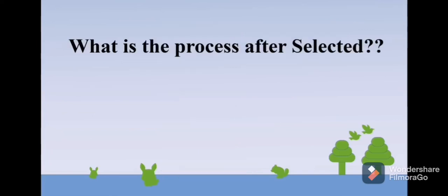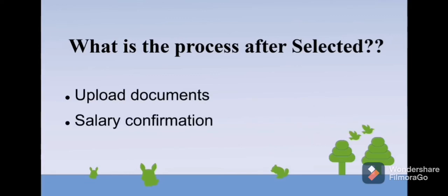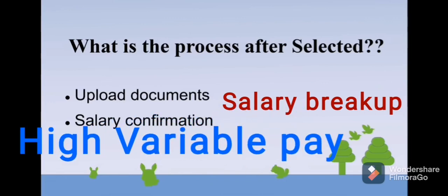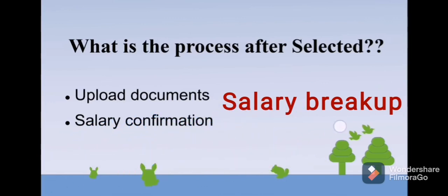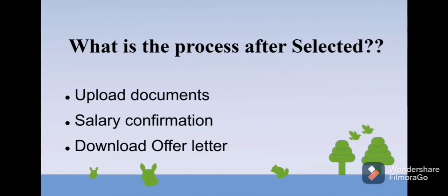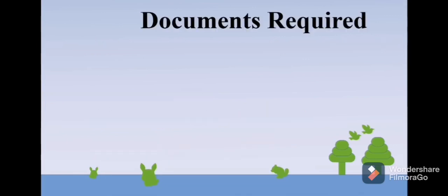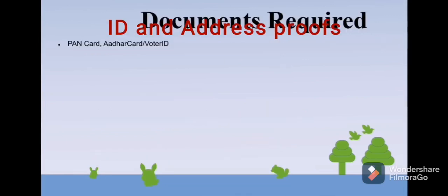Once you have cleared all the rounds, HR will call you to upload documents in the Accenture portal. They will ask about salary confirmation — if you want to update your expected CTC, you can do that at this stage. Make sure to ask about the complete salary breakup, because the variable pay at Accenture is very high. Once the process is done, your offer letter will be uploaded to the Accenture portal for you to download. This offer letter process may take up to two weeks.